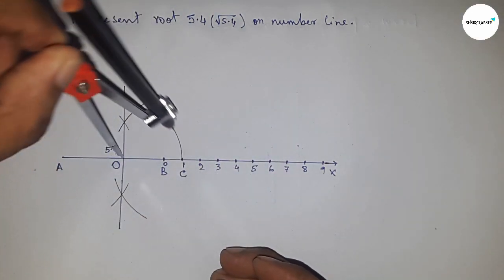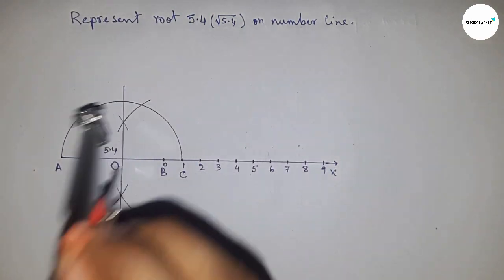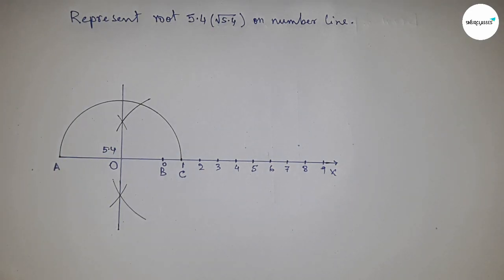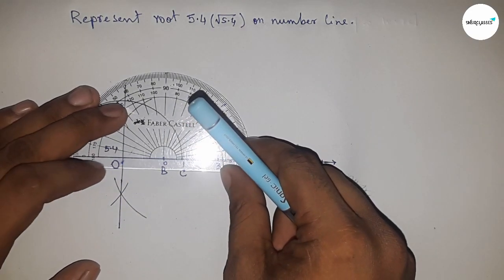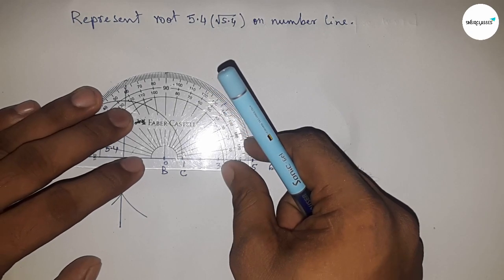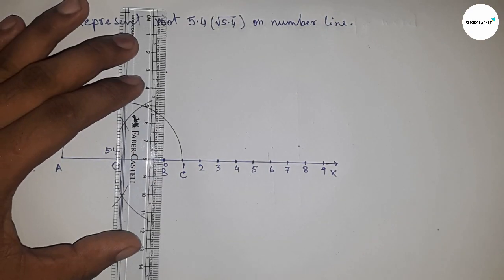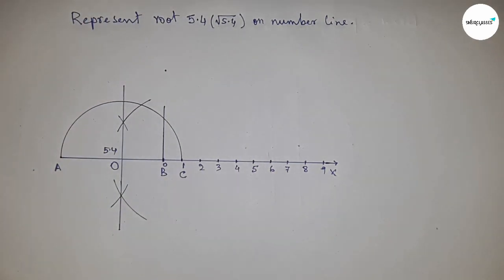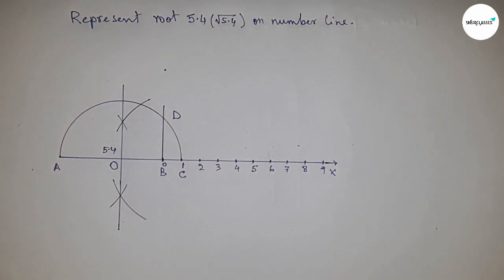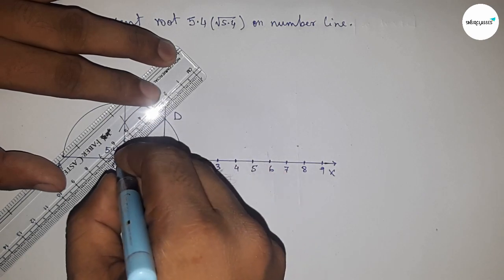Now draw a 90-degree angle on the point B by using a protractor. So join this, which meets the semicircle at point D. Now join O and D.